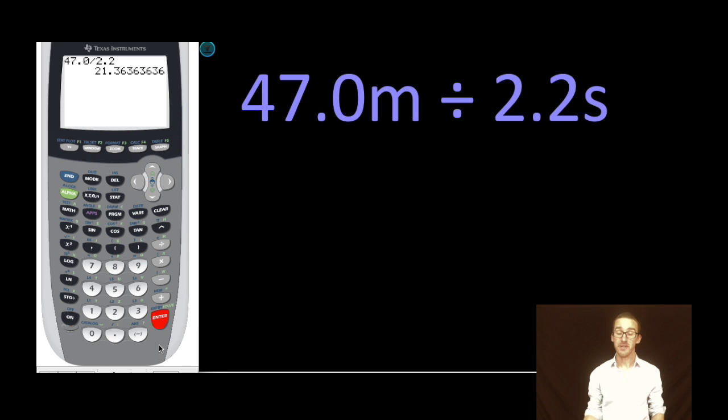Now significant figures really solve the problem for us of where do we round? We have to ask ourselves what's the operation, in this case it's division, which means that our final answer will be rounded to match the measurement with the fewest total significant figures.